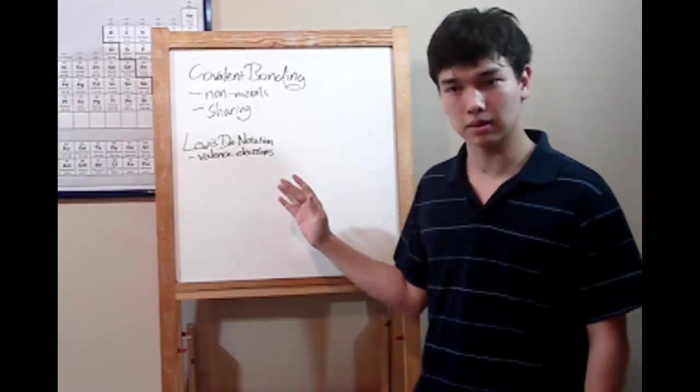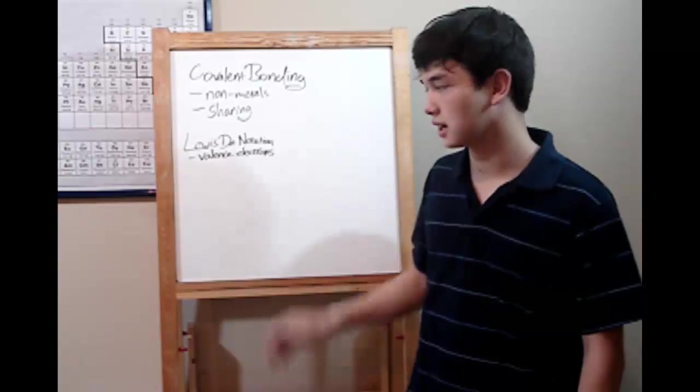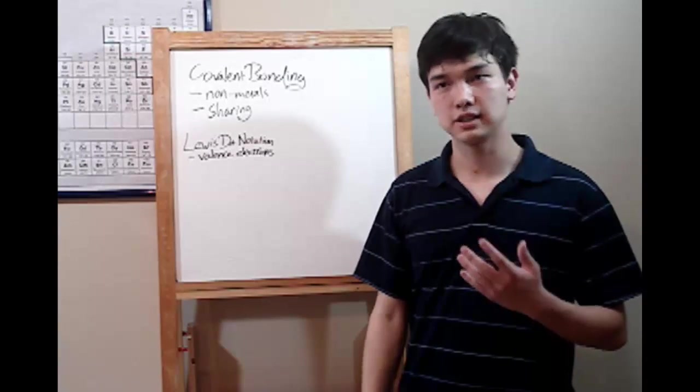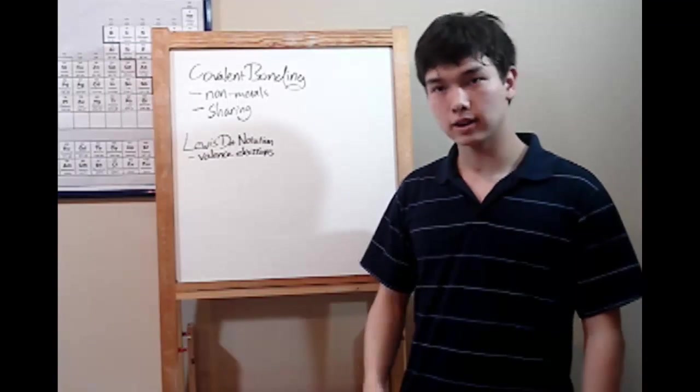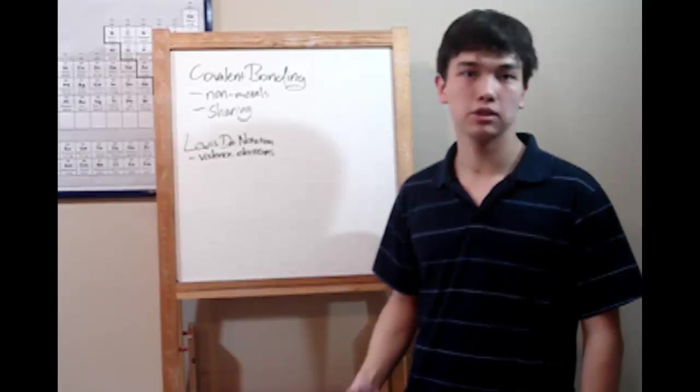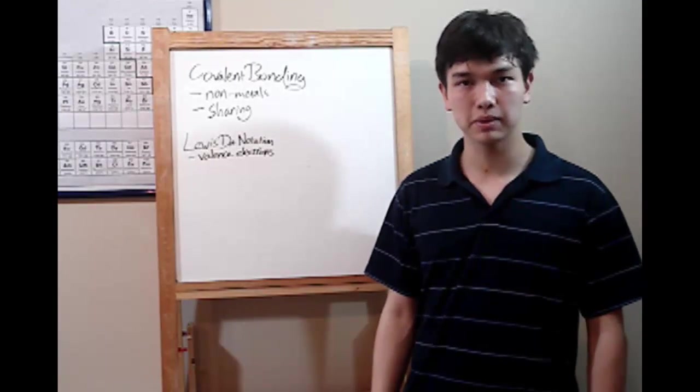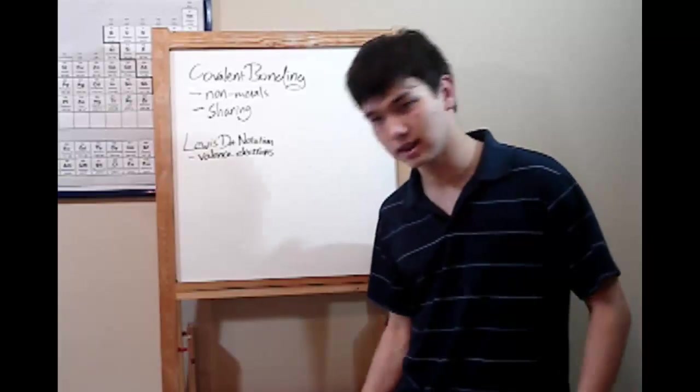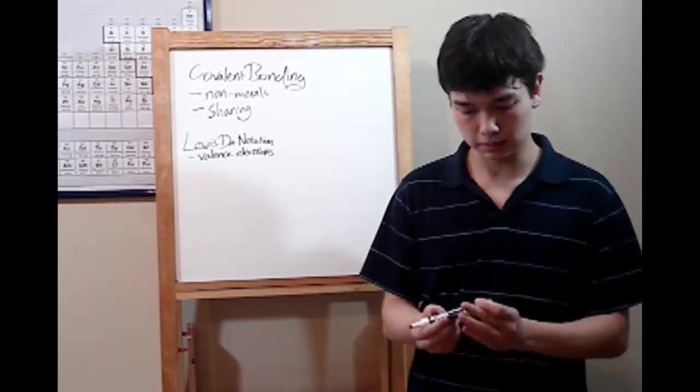So let's start with some covalent bonds. But first I want to show you Lewis dot notation. Lewis dot notation is an easy way of figuring out how covalent bonds work. It shows you only the valence electrons, the ones we want to work with when getting to a noble gas electron configuration. So let me show you some of those.